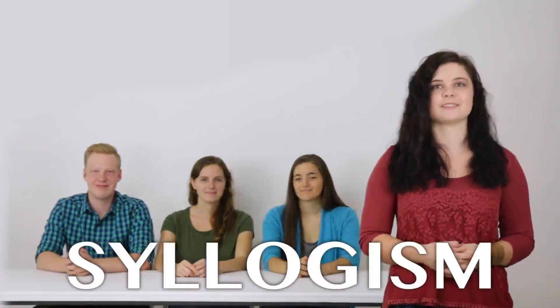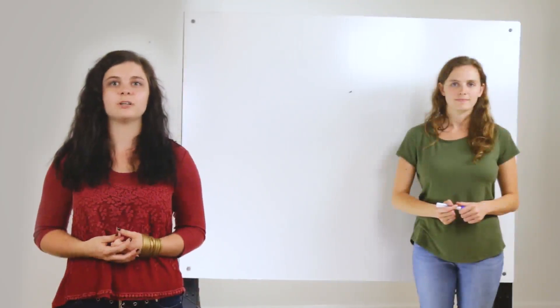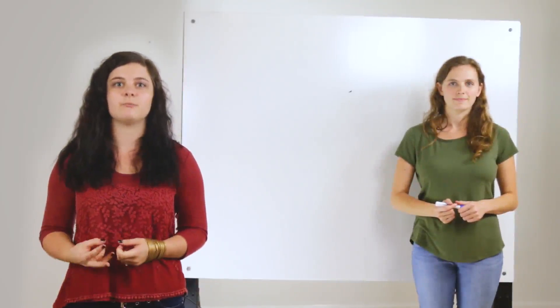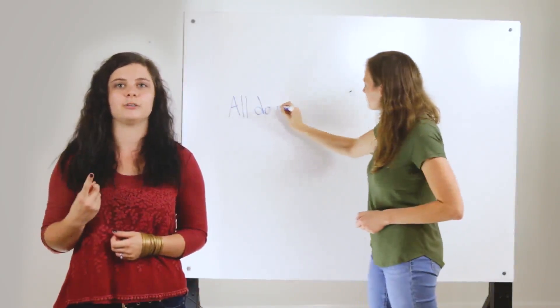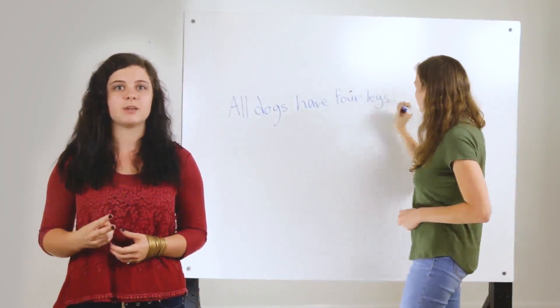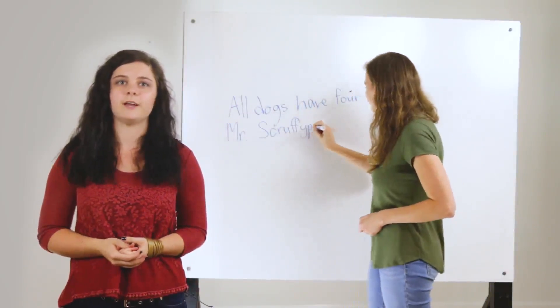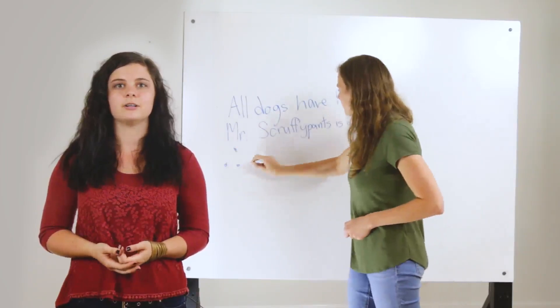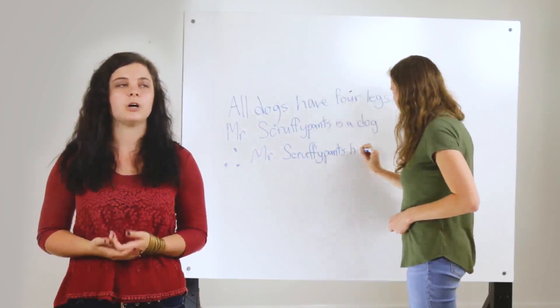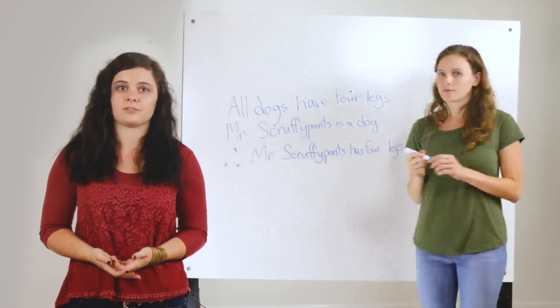Next, you need to know what a syllogism is. A syllogism is a short logical argument that contains three components: two premises and one conclusion. That means you have two statements - all dogs have four legs and Mr. Scruffypants is a dog - and a conclusion that follows from them logically: Mr. Scruffypants has four legs.